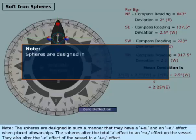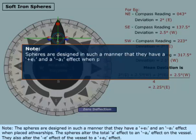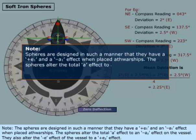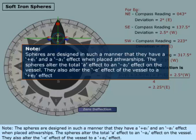Note, the spheres are designed in such a manner that they have a positive E1 and a negative A1 effect when placed athwart ships. The spheres alter the total A effect to a negative A2 effect on the vessel. They also alter the negative E effect of the vessel to a positive E2 effect.